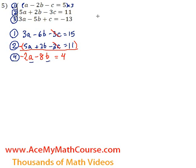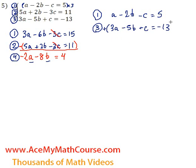Equation 1 again, but no longer multiplied by 3. I have just a minus 2b minus c equals 5. And equation 3, I have 3a minus 5b plus c equals negative 13. Now I can just add these equations because negative c plus c will be 0. So if those cancel out, that's a great thing. Negative c plus c is 0.